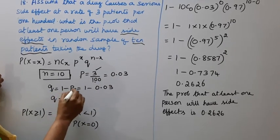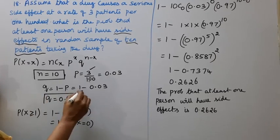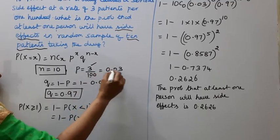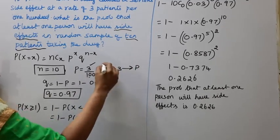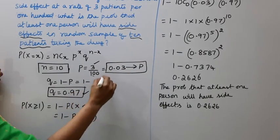q is 1 minus p, 1 minus 0.03, q is equal to 0.97. This is p. Then p, q, n.